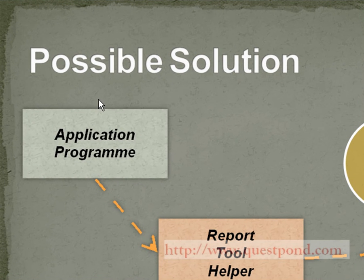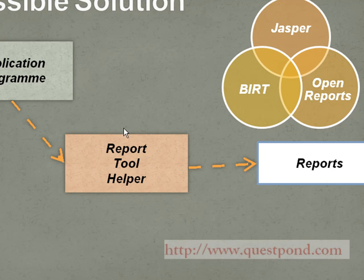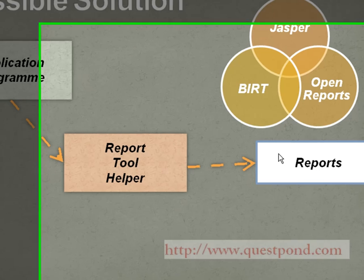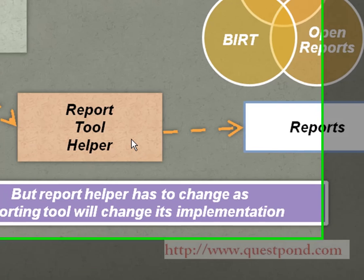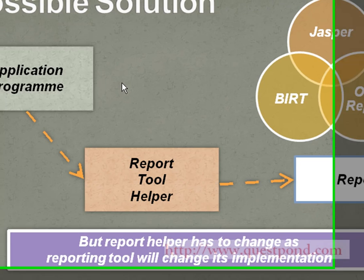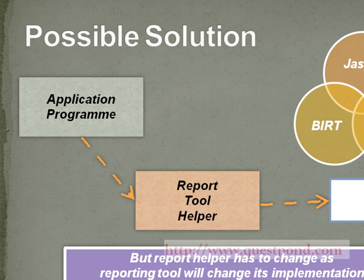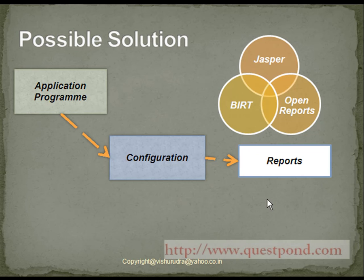A second possible solution is that instead of the application program directly interacting with the report tool, we make use of one more class known as a ReportToolHelper, which will interact with the reporting tools. The problem with this approach is that if we have to change the tools, the ReportToolHelper has to change. However, this implementation is better than the earlier one since the application program does not change directly — hence the tightly coupled application is now broken down into a loosely coupled one because of this helper class.